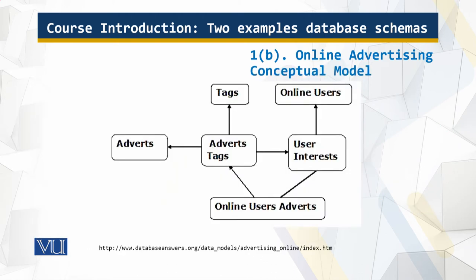What is there in the online advertising conceptual model? We have advertisement tags. Those tags can be free, and this attracts a lot of traffic. Then you have online users with various interests — some are in surfing, some have other interests. Then you have online user advertisements and the advertisements themselves. You can see they are linked together pretty much.